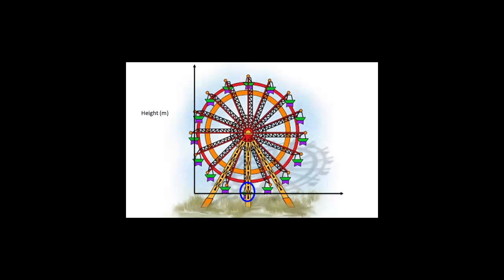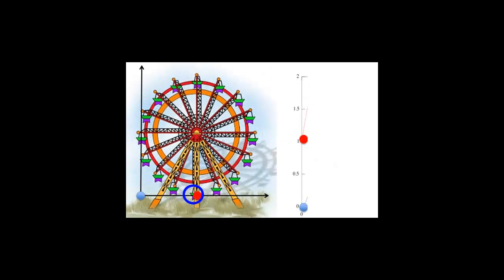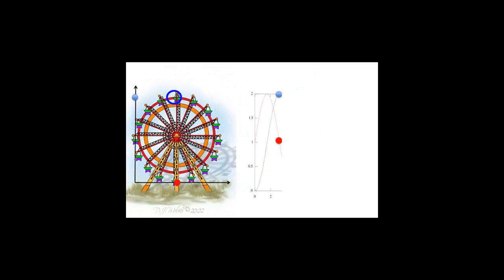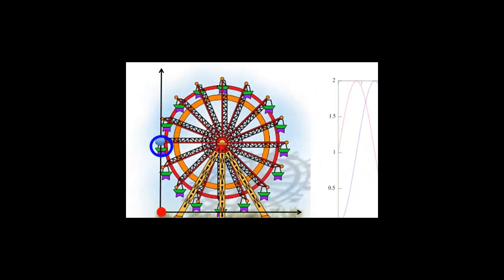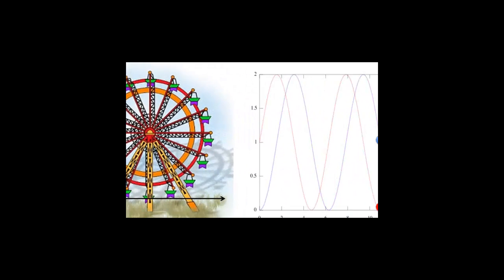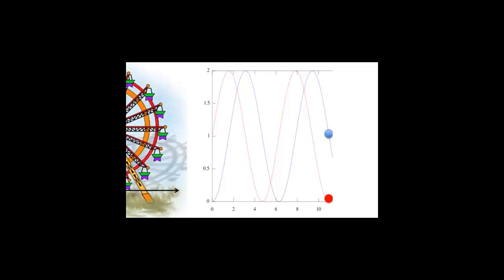When we consider our initial position, the x component is halfway to the maximum amplitude, and the y component is at the minimum. After some time has elapsed, the x component is at a maximum, while the y component is halfway to the maximum. If we continue plotting this motion through time, we see that the path our carriage on the ferris wheel has traversed is a circle, and each component of the motion is sinusoidal.